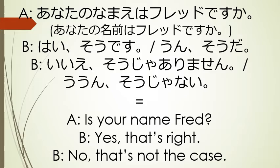For another example, let's imagine a conversation between two people. The first person says 'Anata no namae wa Fredo desu ka?' and the second person responds 'Hai, sou desu' or 'Un, sou da,' meaning the first person said 'Is your name Fred?' and the second person says 'Yes, that's right.' Alternatively, they could say 'Sou ja arimasen' or 'Sou ja nai,' which would mean 'No, that's not the case.'